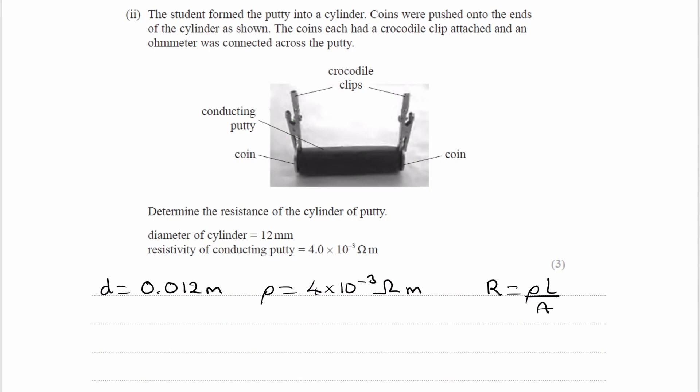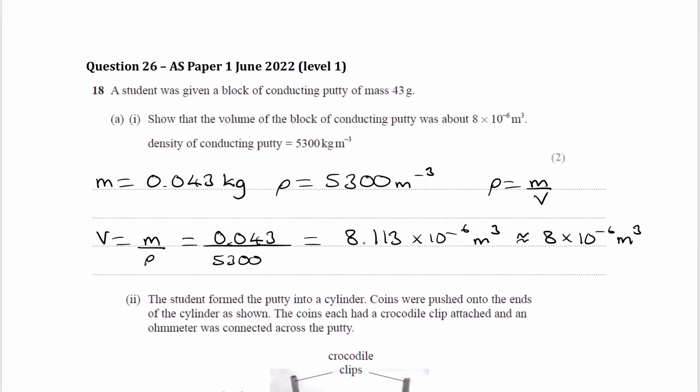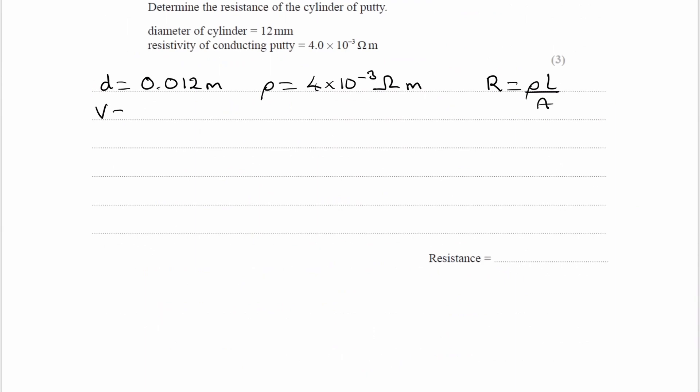So we need to work out the length somehow. We're told in the previous part that the volume, or we worked out in the previous part, that the volume is 8.113 times 10 to the minus 6. So what we can do is, if we have a cylinder, we know that the cross-sectional area multiplied by the length would be the volume. And then so the length is equal to the volume divided by the cross-sectional area.